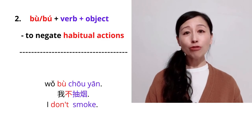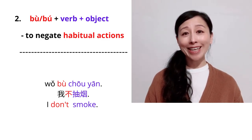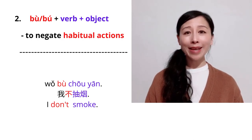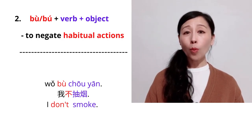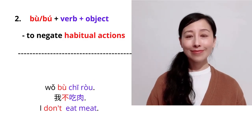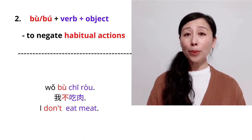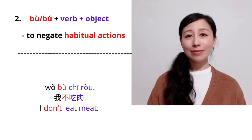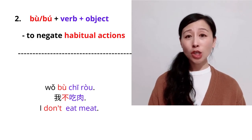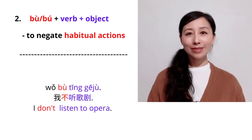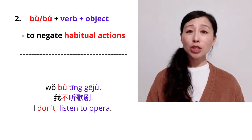The second usage of bu can be used to negate habitual actions, such as eating habit. For example, I don't smoke. Wǒ bù chōuyān. Another example, I don't eat meat. Wǒ bù chī ròu. I don't listen to opera. Wǒ bù tīng gējù.